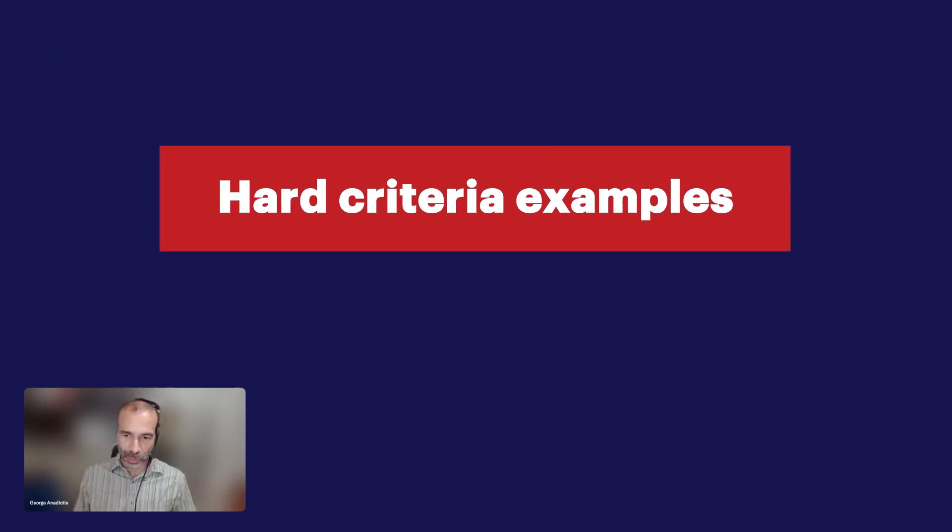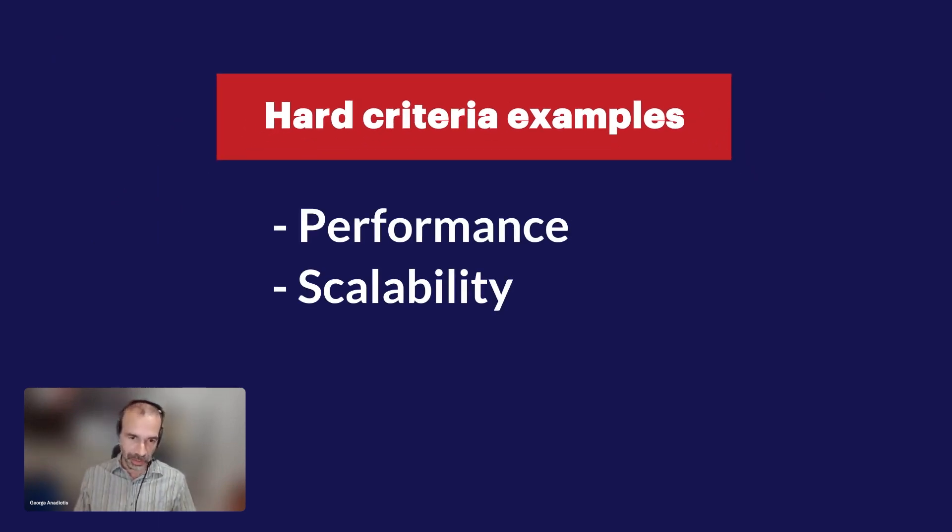For people who are starting to evaluate graph databases, or who have a home-grown solution to do some sort of graph functionality, if they're looking to buy a commercial graph database, what are some of the criteria they should look at? All my decisions basically classify those criteria into two categories: hard or functional criteria and soft or non-functional criteria. Some examples of hard criteria would be obviously performance and scalability — typically the first ones that people look at.